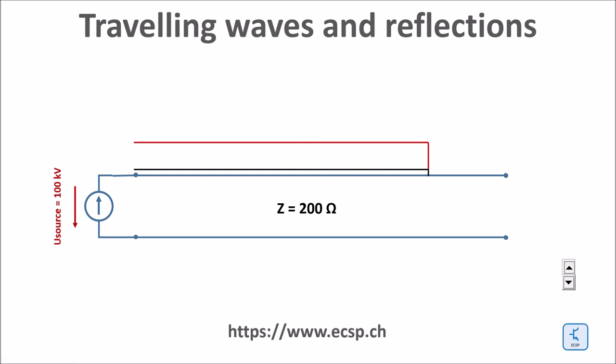If the line end is open the voltage is doubled at the line end and the current is equal to zero. If we connect a very large resistance at the end of the line we get the same reflection as with a totally open end of the line.